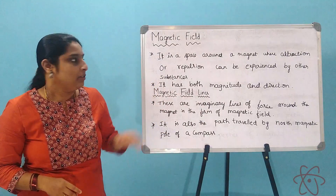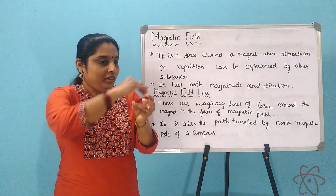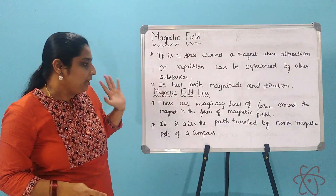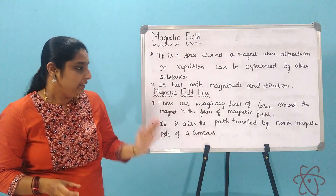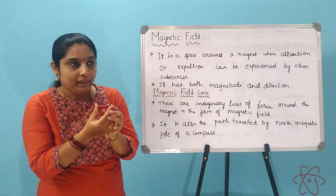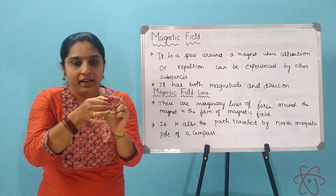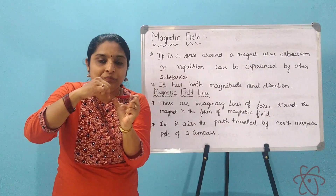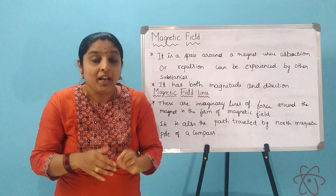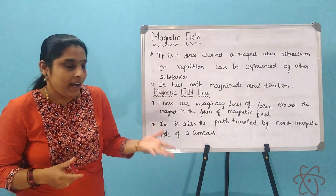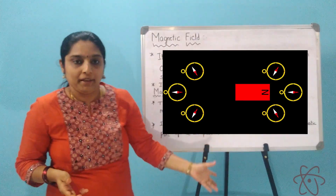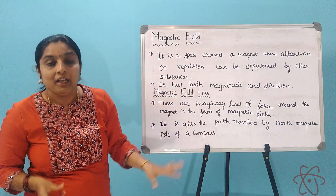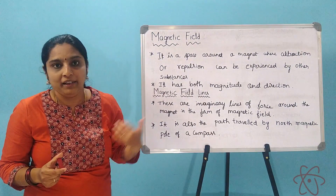Now let us come to magnetic field lines. Magnetic field is the space around the magnet where you feel the attraction or repulsion of the magnet. Magnetic field lines are imaginary lines of force around the bar magnet which represent the magnetic field. They are also defined as the path traveled by the north magnetic pole of a compass. To make this clearer, we will do an experiment to draw magnetic field lines.